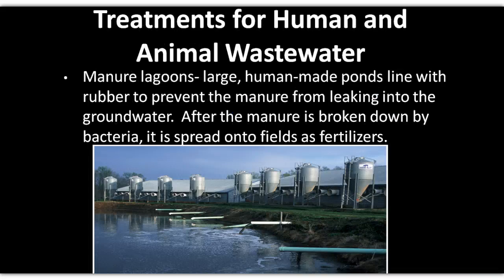CAFOs — concentrated animal feeding operations — produce large waste lagoons. These lagoons are supposed to be lined to prevent material from leaching down into the groundwater. It's just another way of trying to settle out waste material, and frankly it's pretty disgusting. But this is one of the prices we pay for a lot of the meats we like to eat.